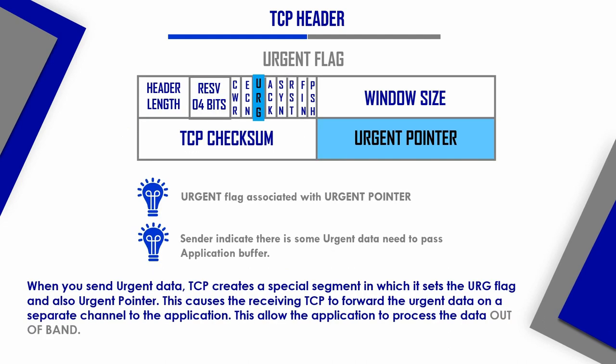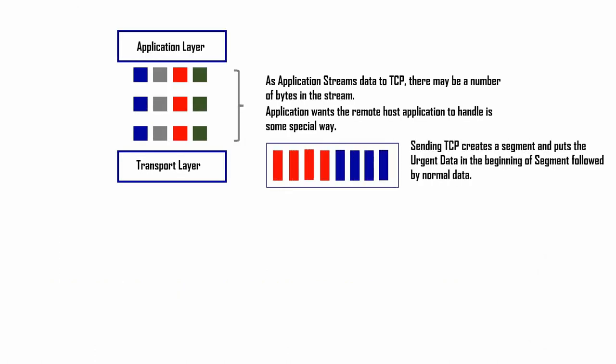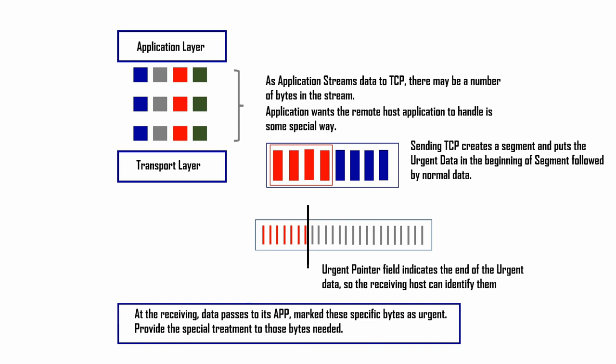The urgent flag is rarely used in modern TCP implementations. When an application marks data as urgent, the sender-side TCP receives a write request and enters a special state called urgent mode. In urgent mode, it records the last byte of the application-specified urgent data and sets the urgent pointer field. The receiver uses that pointer to separate urgent data from normal data and prioritize its delivery to the application. Only one urgent pointer is maintained per TCP connection.